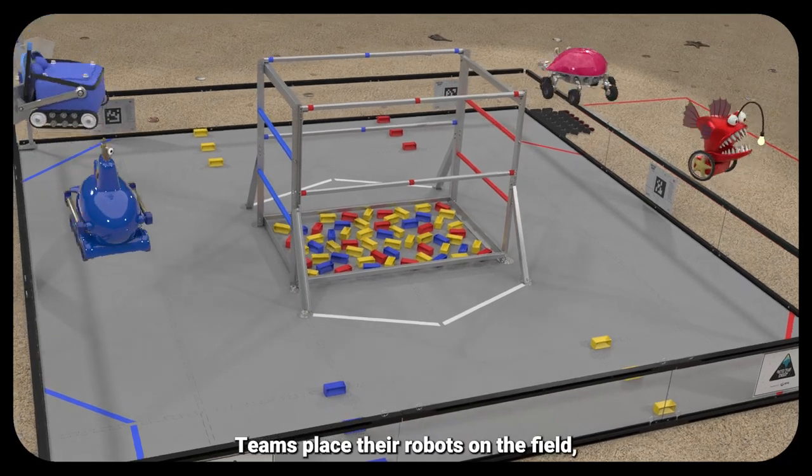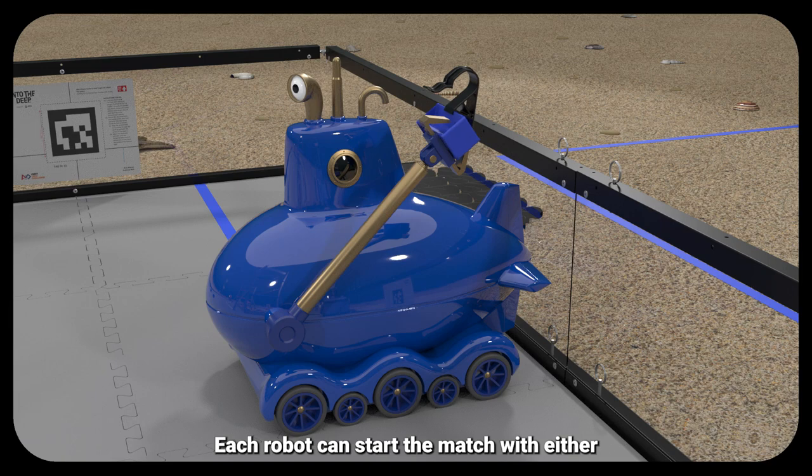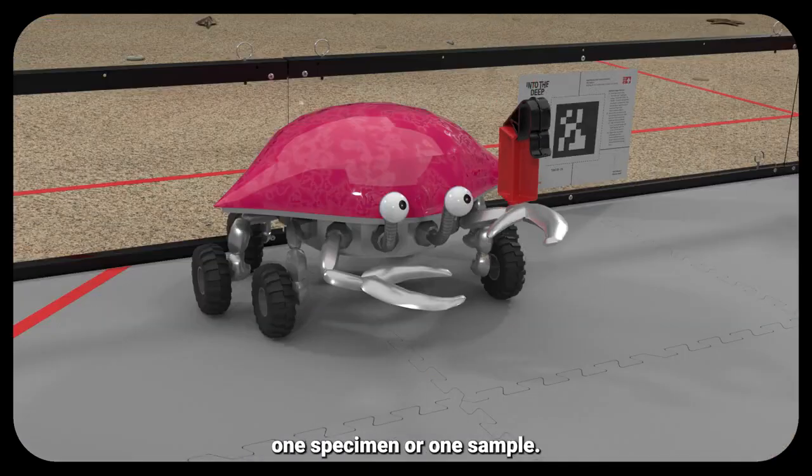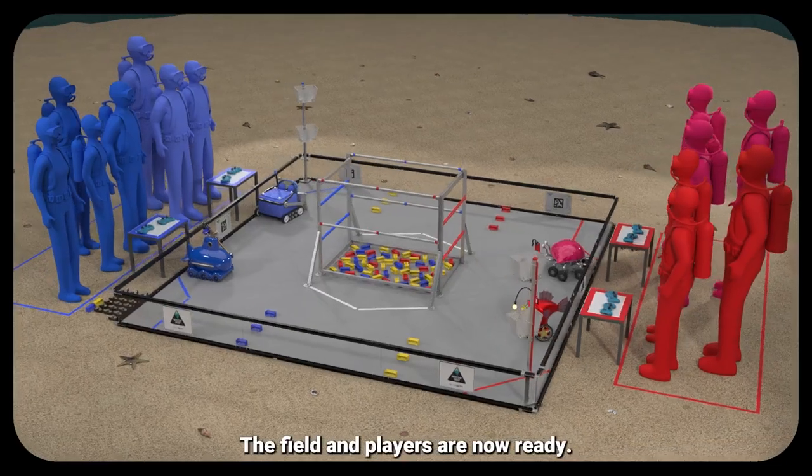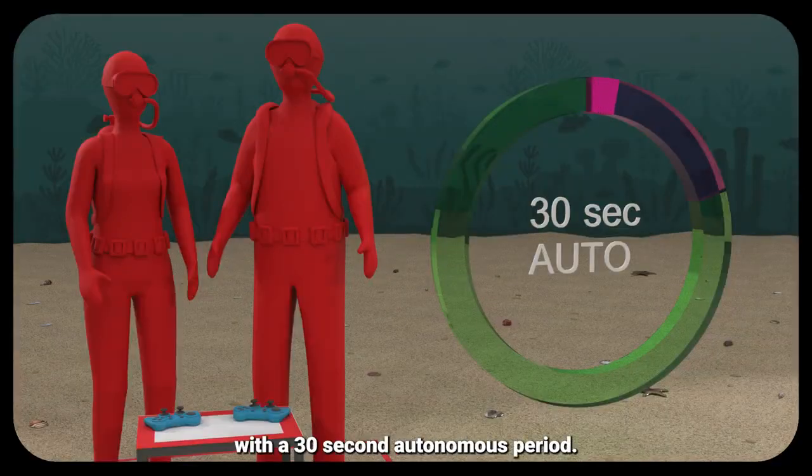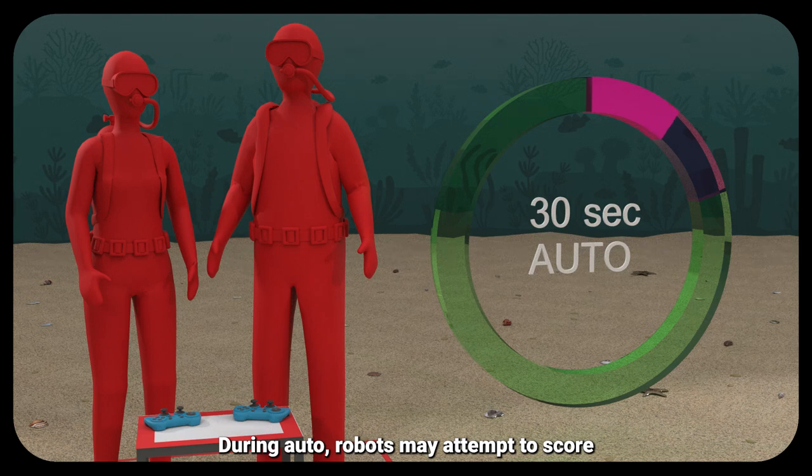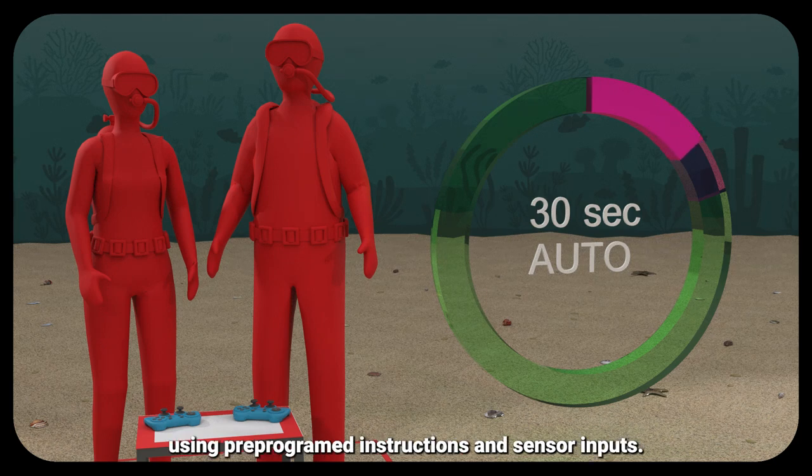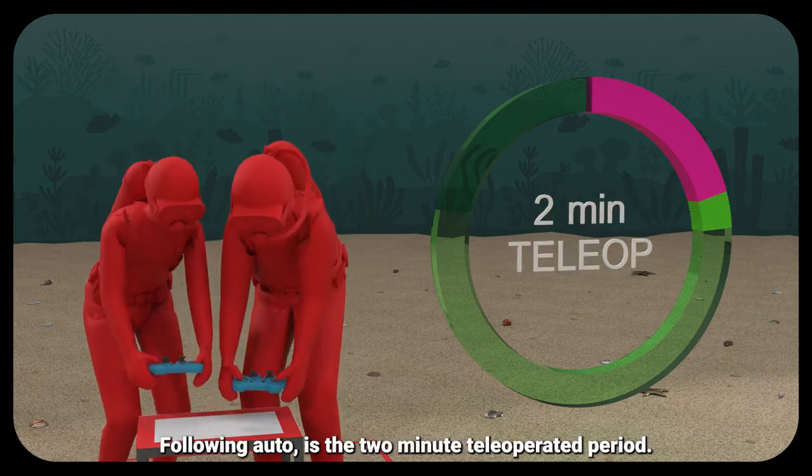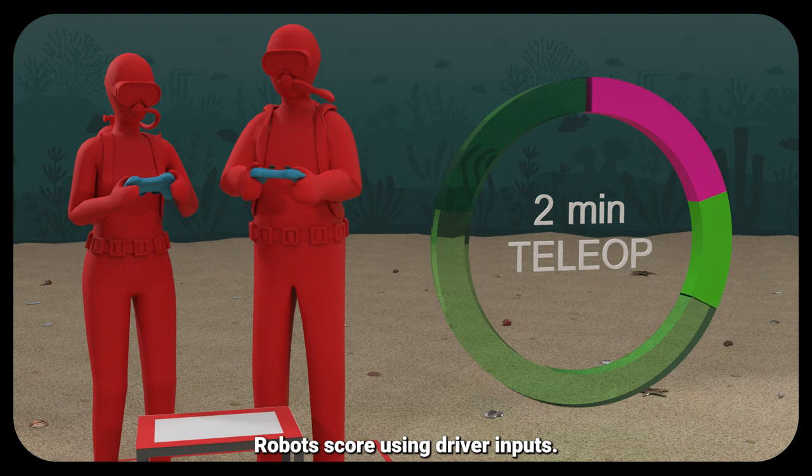Teams place their robots on the field, touching the sidewalls. Each robot can start the match with either one specimen or one sample. The field and players are now ready. The match begins with a 30-second autonomous period. During auto, robots may attempt to score using pre-programmed instructions and sensor inputs. Following auto is the two-minute teleoperated period. Robots score using driver inputs.